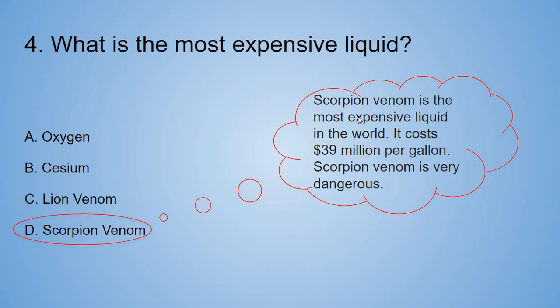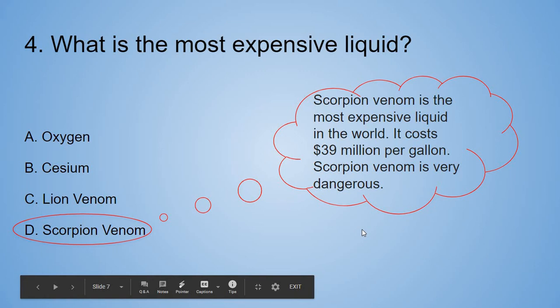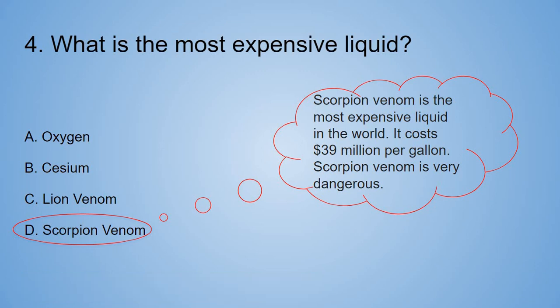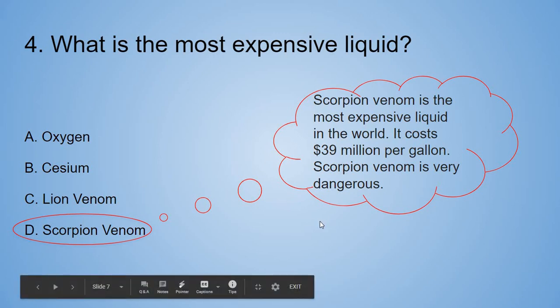Number D. Scorpion Venom. I knew it. I don't like venomous stuff. Scorpion Venom is the most expensive liquid in the world. It costs 39 million dollars per gallon?! And Scorpion Venom is very dangerous. That's self-explanatory because it's Scorpion Venom.